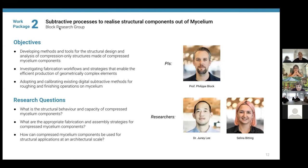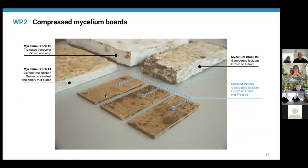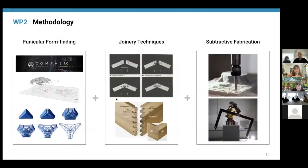Work Package 2 is led by Professor Block at the Block Research Group at ETH Zurich, with full-time researchers Juni and Selena. Compressed mycelium boards differ from typical spongy mold-grown mycelium samples: pressure or compression is applied to make them denser and gain greater structural integrity. Because the material's bending and tensile strength is quite low, it must be placed in configurations where it acts primarily in compression — requiring specific form-finding methods.